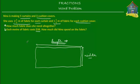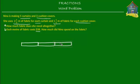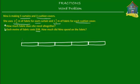So let's see what we have. Nina is making five curtains and three cushion covers. For each curtain she uses two and a half meters of fabric. So if this is one unit of curtain, Nina makes five curtains, so we'll draw five such units. And each of these units is two and a half meters long. These are the curtains.